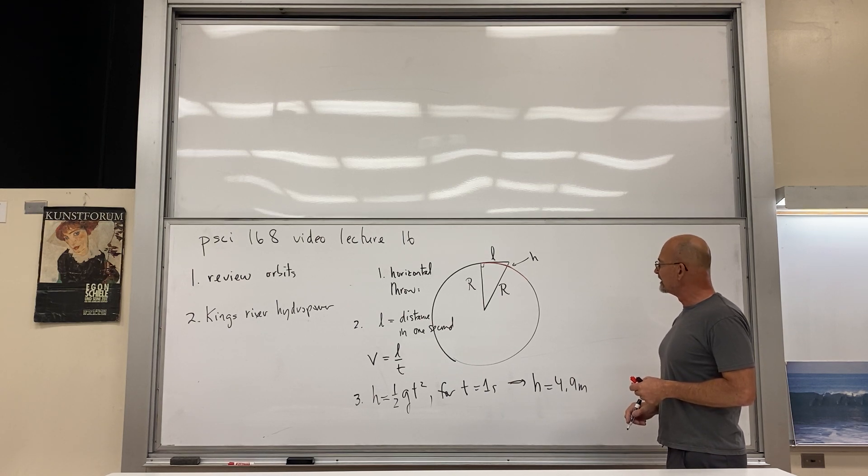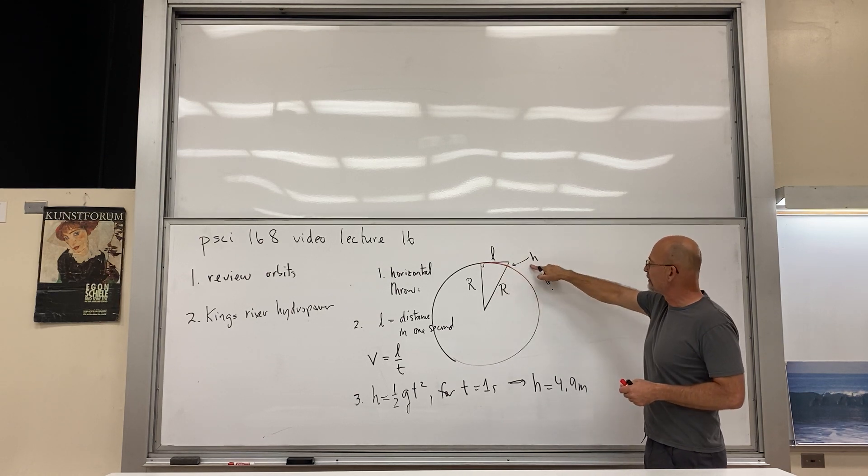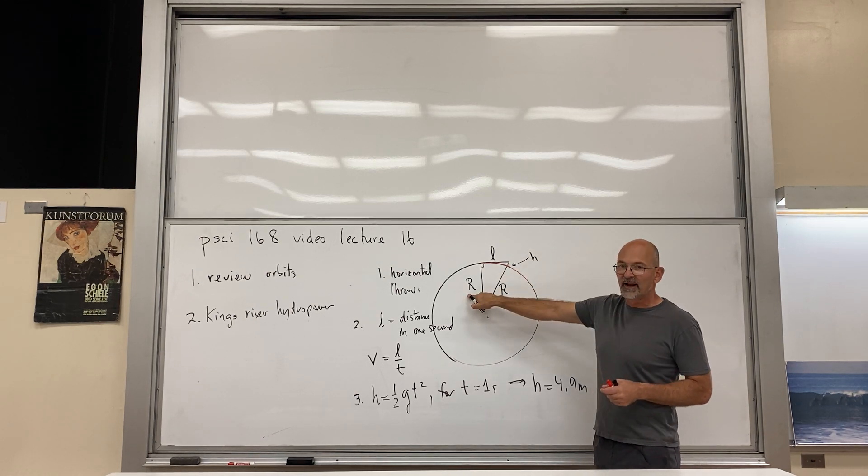So the h equals 4.9 meters that we learned in the theory of free fall, and both of these things are happening at the same time. It's moving forward and it's falling, and so it's going in that little red arc that I brought there. So what's unknown in this problem now is l. Okay, we know h is 4.9 meters, we know r is the radius of Earth.